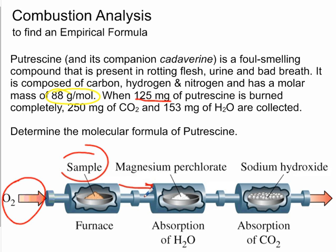You would know that 153 milligrams of water vapor were collected. The gas that comes out of that chamber has no more water vapor — it'll have some carbon dioxide. The second chamber contains sodium hydroxide or some other substance that absorbs carbon dioxide gas. You would measure its mass before and after combustion to find that 250 milligrams of carbon dioxide were produced. The nitrogen in this compound is not discussed much; some kind of nitrogen compound like nitrogen dioxide gas comes out at the end. We're going to figure out how much nitrogen there was in an indirect way.